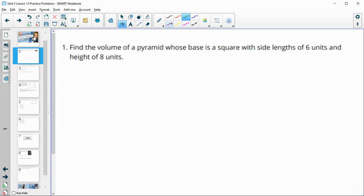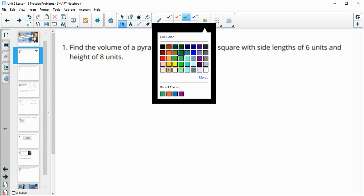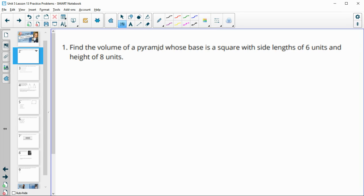Number one has us finding the volume of a pyramid whose base is a square with side lengths of six, and then we've got a height of eight. So we've got this base here, that's a six by six square.